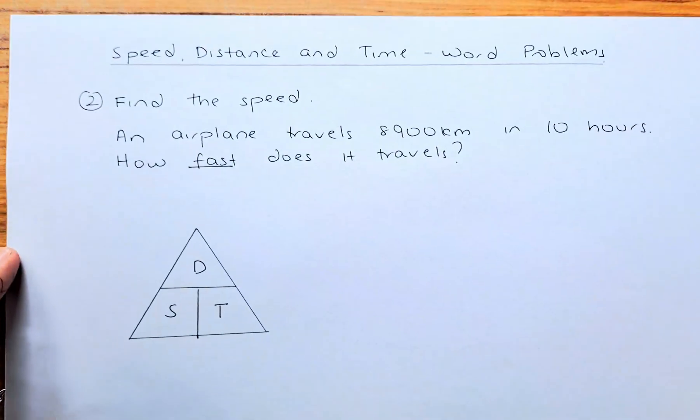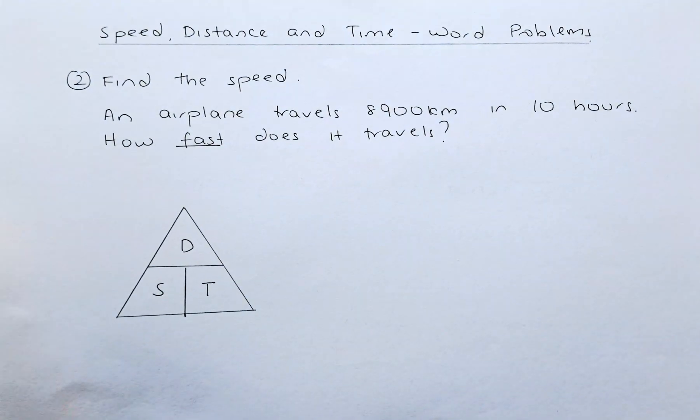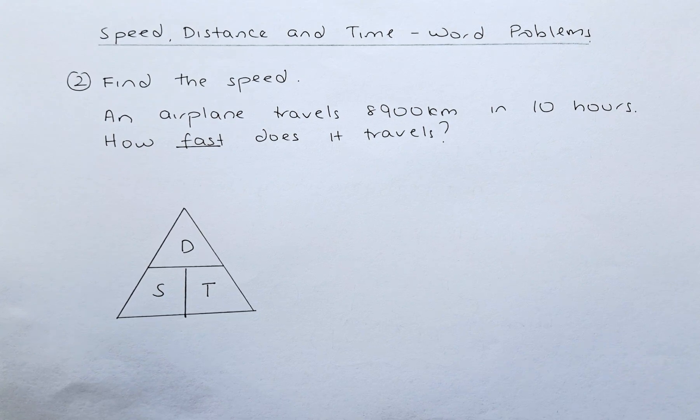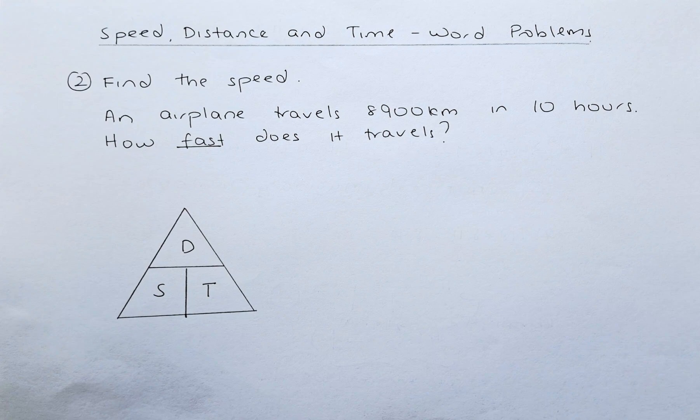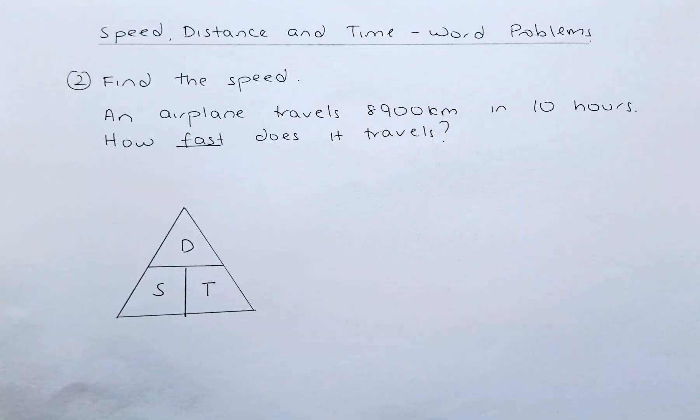We shall do the second example now. The second example is we are going to find the speed. An airplane travels 8,900 km in 10 hours. How fast does it travel? The word fast will indicate they want to find the speed.